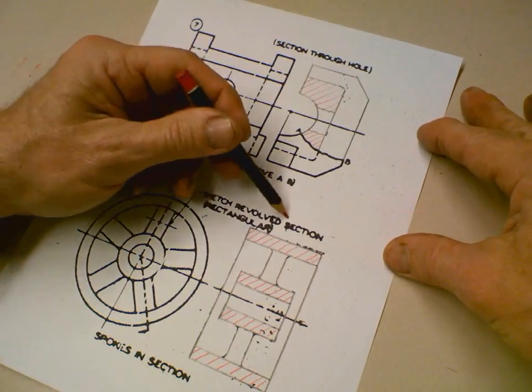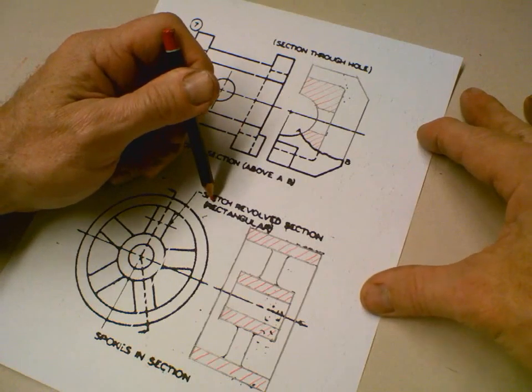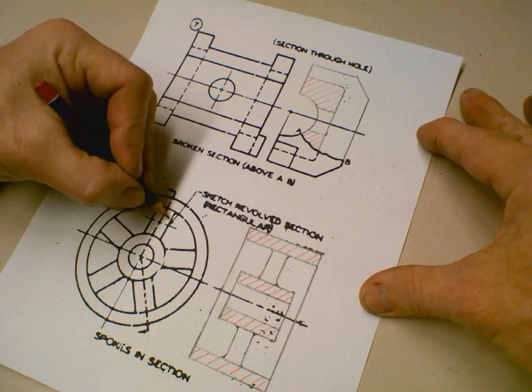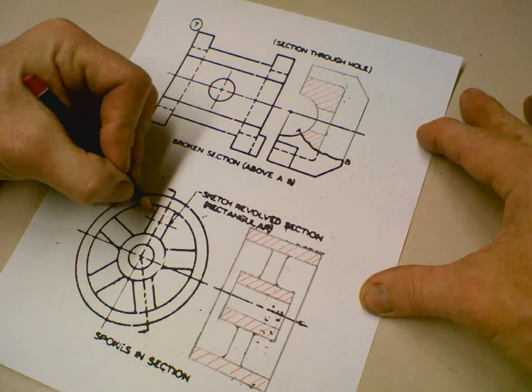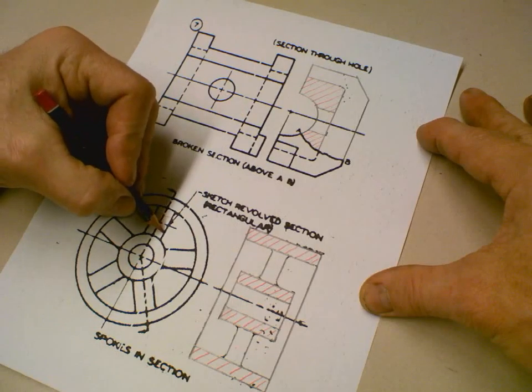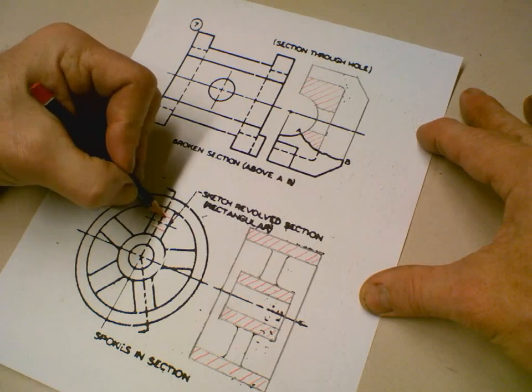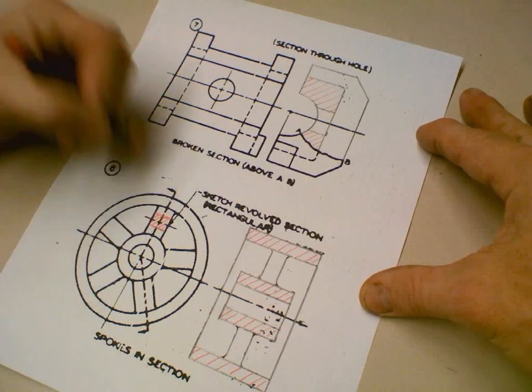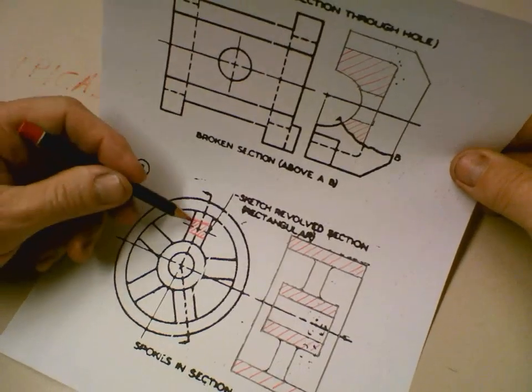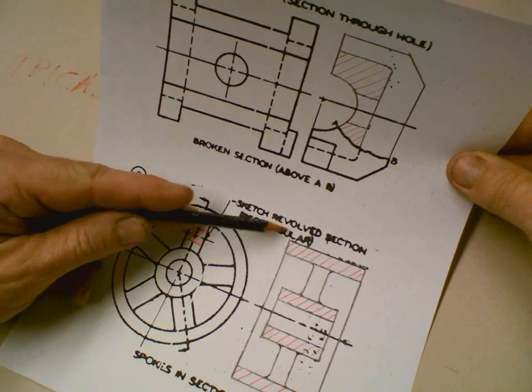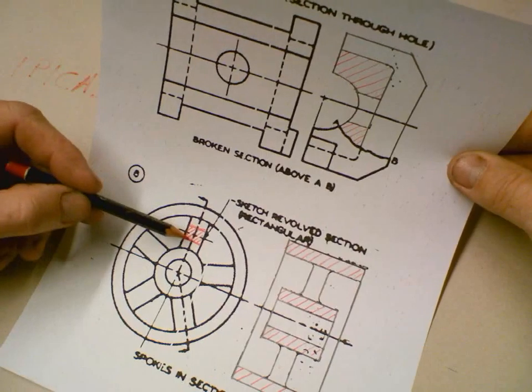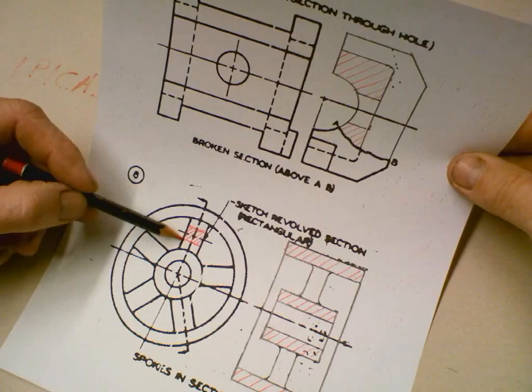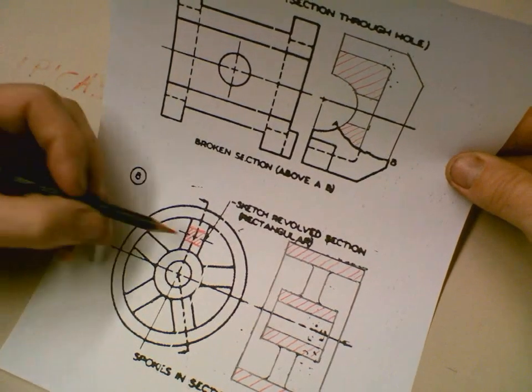Now it also says to sketch the revolve section rectangular, so whatever the distance is here, you can just represent that on the center line up and down. And then this would be, and then you section like this, so there's the profile. This is a revolved section. So revolve section means revolve it right on that view. It would be the cross section of the spoke, so the person making that part, whether, you know, whether how they're making it, he sees the cross section.